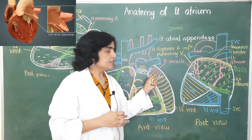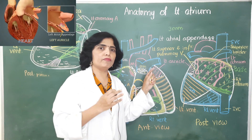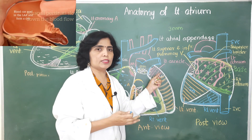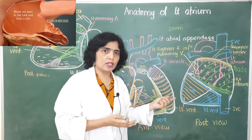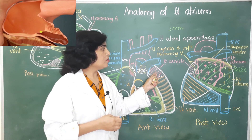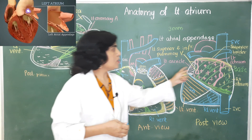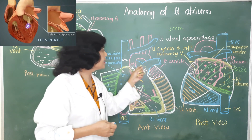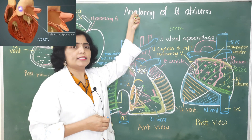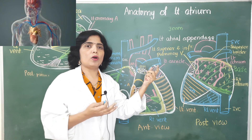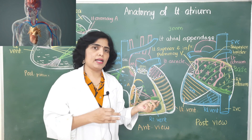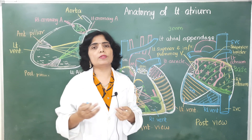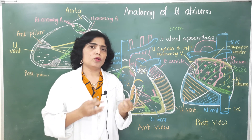The musculi pectinati in the left auricle create a sponge-like structure. This sponge-like structure prevents free flow of blood, causing sluggish blood flow, which favors thrombosis. When these thrombi dislodge, they become emboli that pass from the left atrium into the left ventricle, then through the aorta and its branches, potentially blocking arteries such as the cerebral artery, causing cerebral embolism, or the renal artery, causing renal embolism.